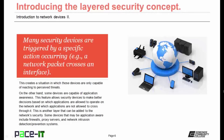Many security devices are triggered by a specific action occurring, as in a network packet crossing an interface on a router. This creates a situation in which those devices are only capable of reacting to perceived threats, and that in itself can be a weakness in security. On the other hand, some devices are capable of application awareness. This feature allows security devices to make better decisions based on which applications are allowed to operate on the network and which applications are not allowed to cross through it. Some devices that may be application aware include firewalls, proxy servers, and network intrusion detection systems or network intrusion prevention systems.